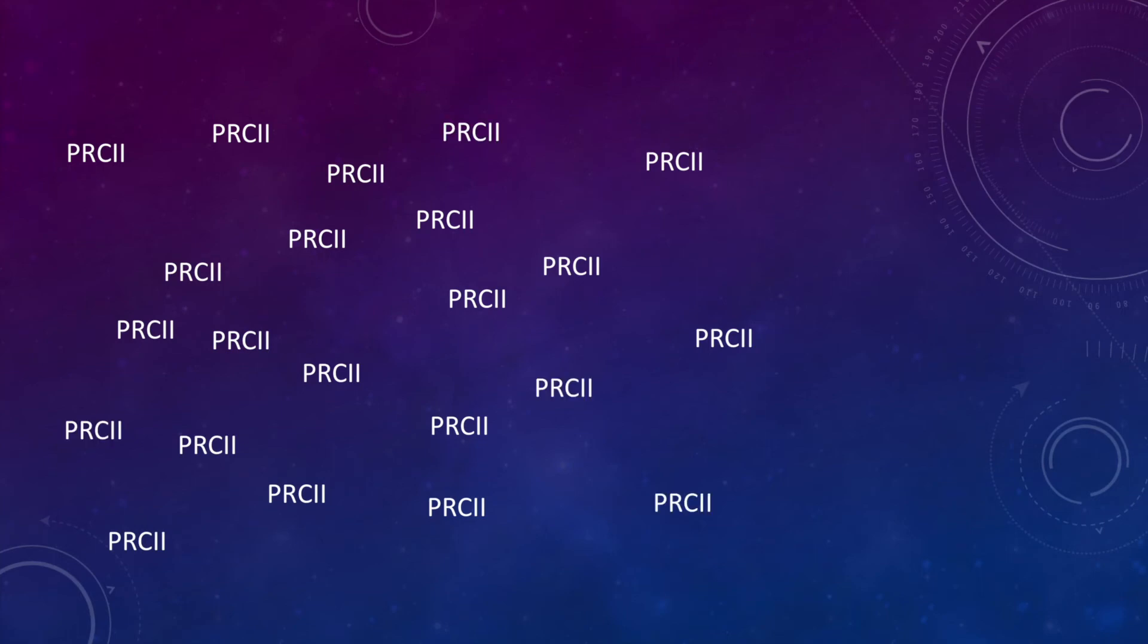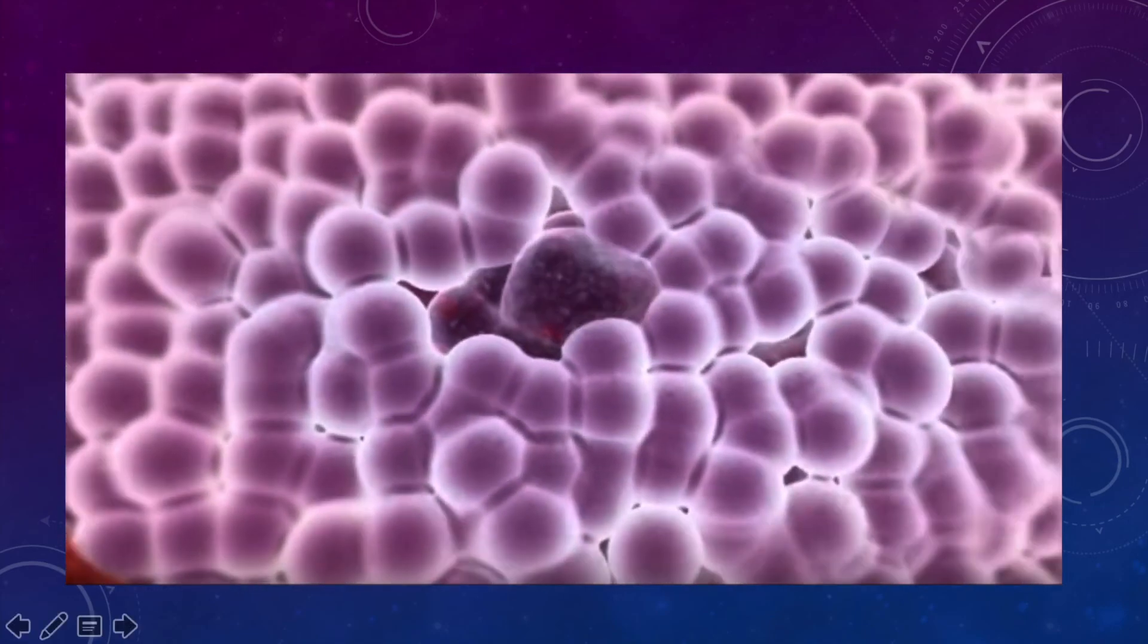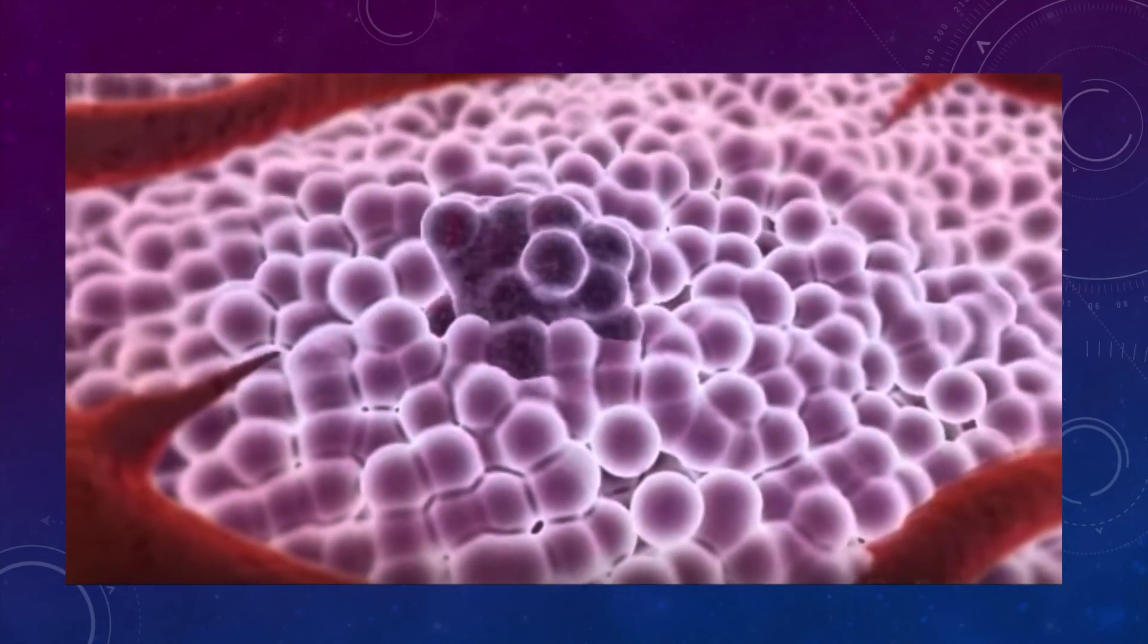One issue with PRC2 is its link to cancer. More and more, scientists are looking into PRC2 and finding overexpression of PRC2 in adult cancer cells, specifically looking at the EZH2 subunit. This makes sense since the EZH2 subunit is the subunit possessing catalytic activity that controls the methylation of genes.